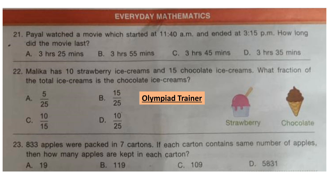Question 23. 833 apples were packed in 7 cartons. If each carton contains the same number of apples, then how many apples are kept in each carton? Since each carton contains the same number of apples, we divide 833 by 7. The answer is 119, so option B is the answer.